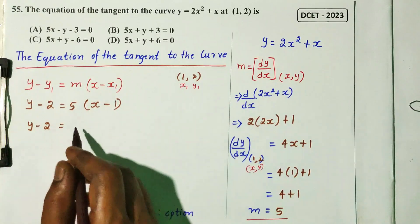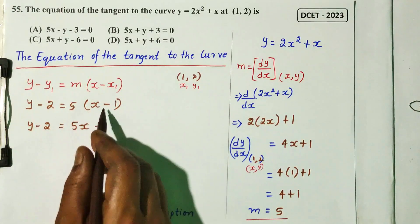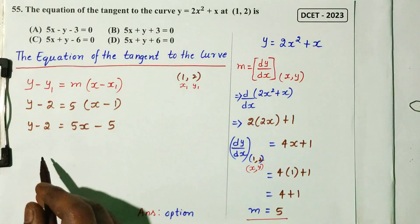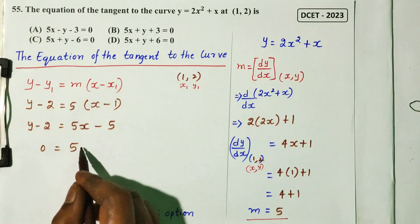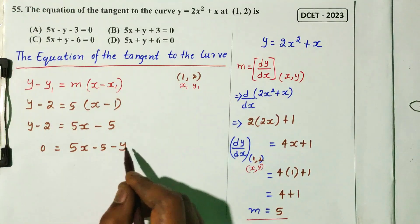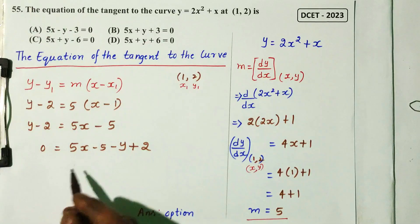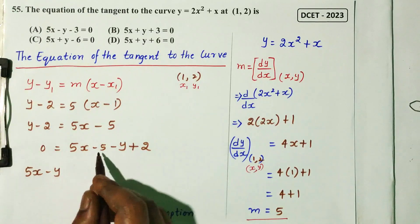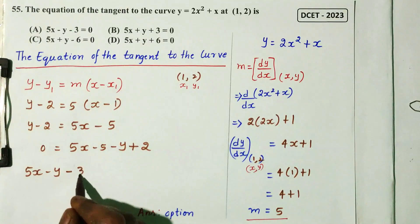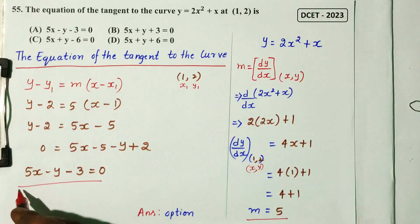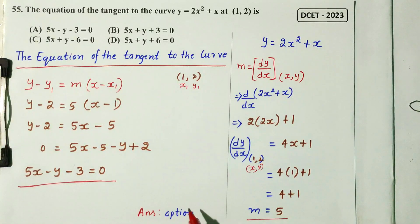Substituting into the tangent equation: y minus 2 = 5 times (x minus 1), giving y minus 2 = 5x minus 5. Rearranging: 5x minus y minus 3 = 0. Option A is the right answer — DCT 2023.